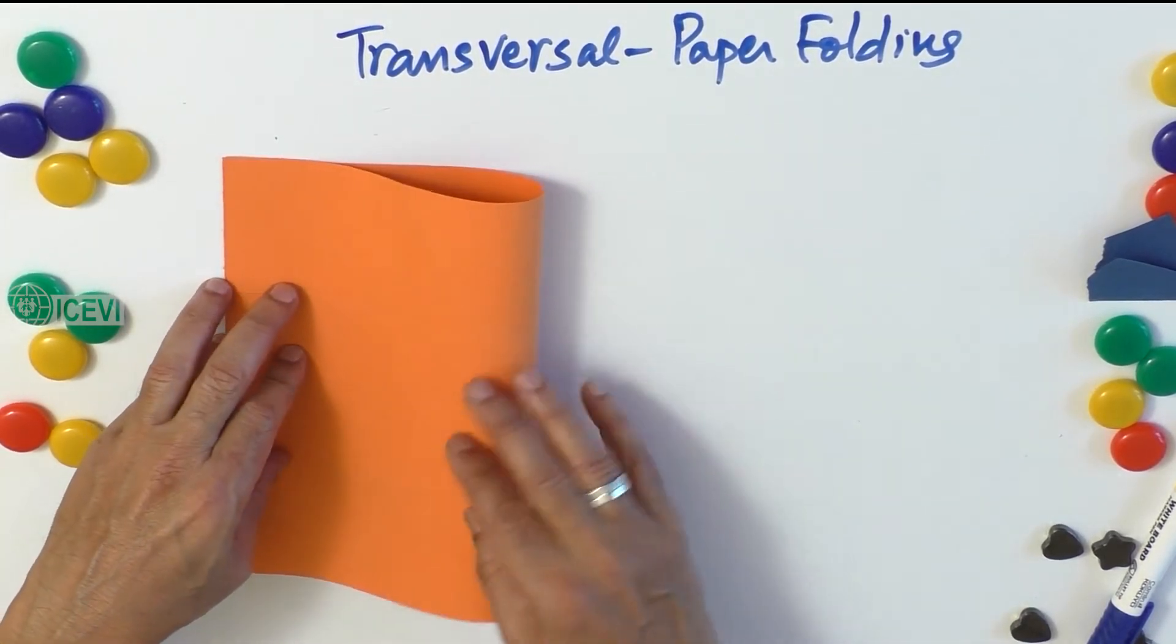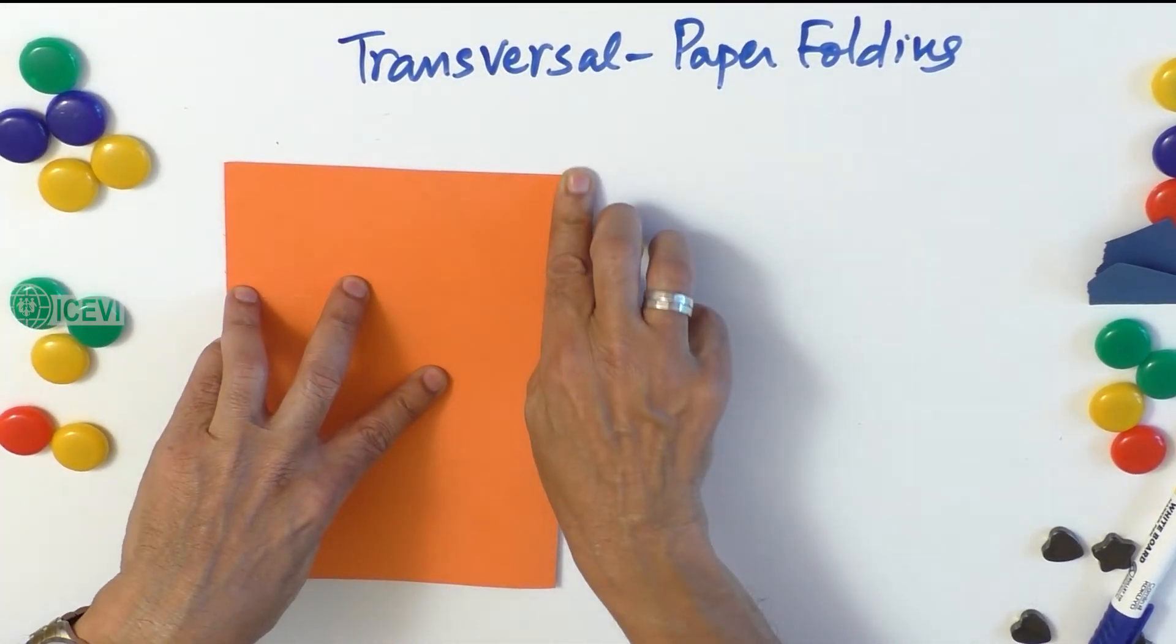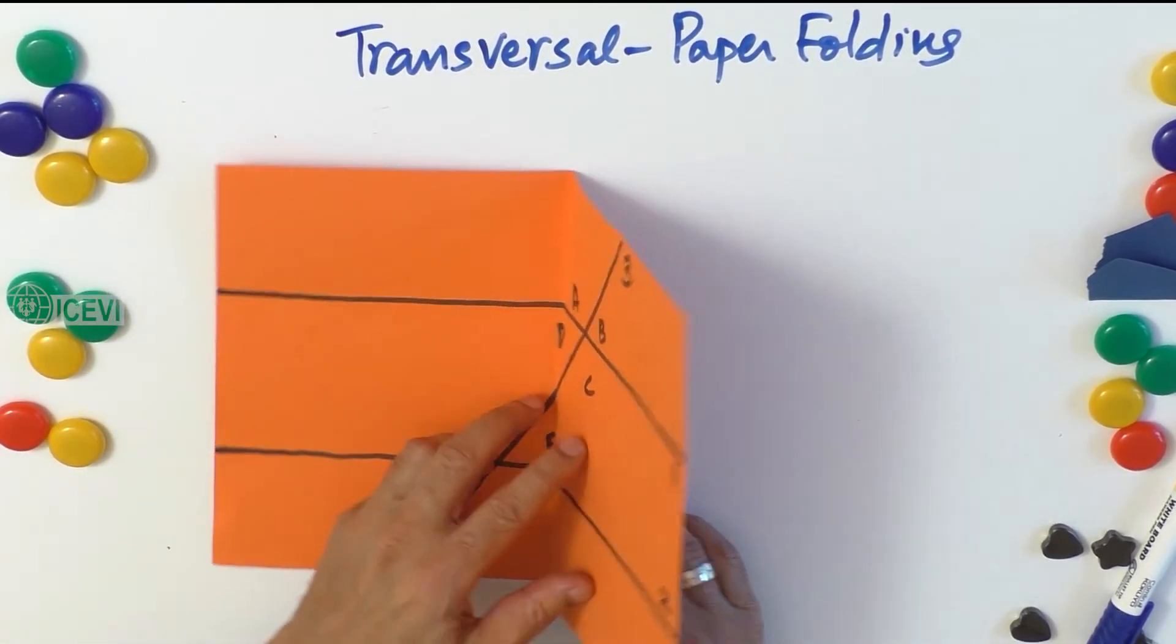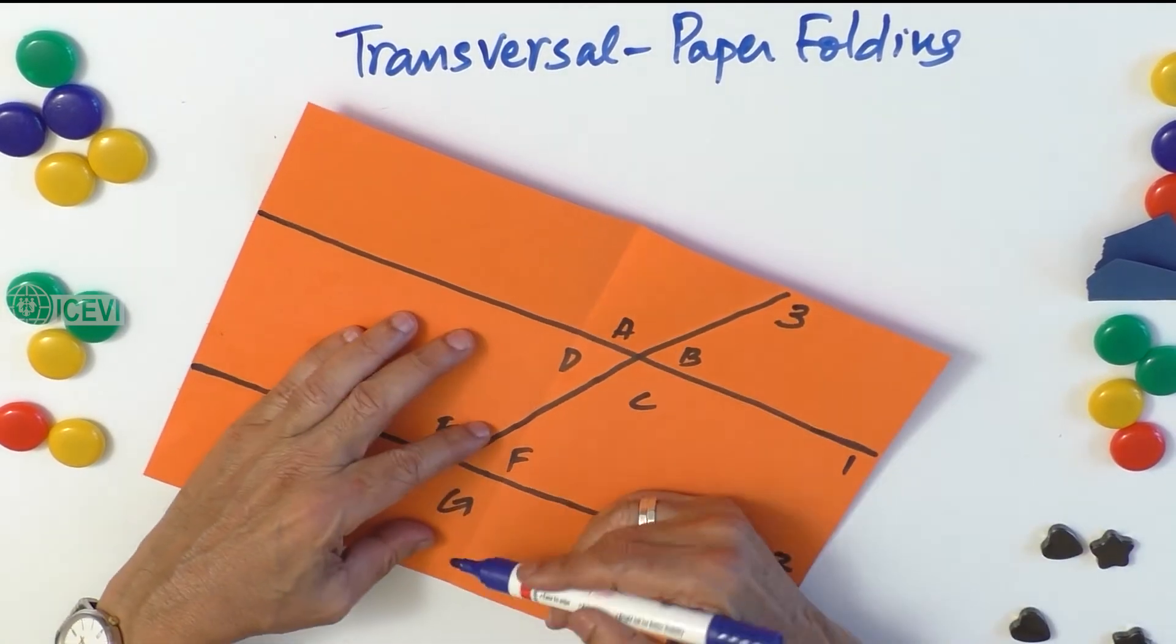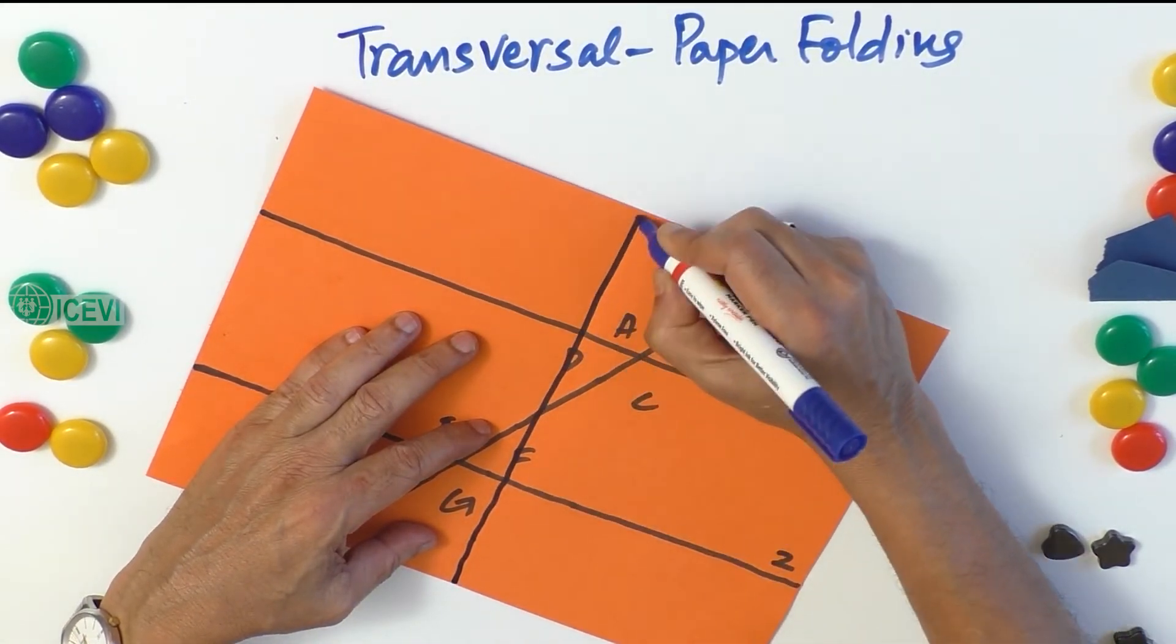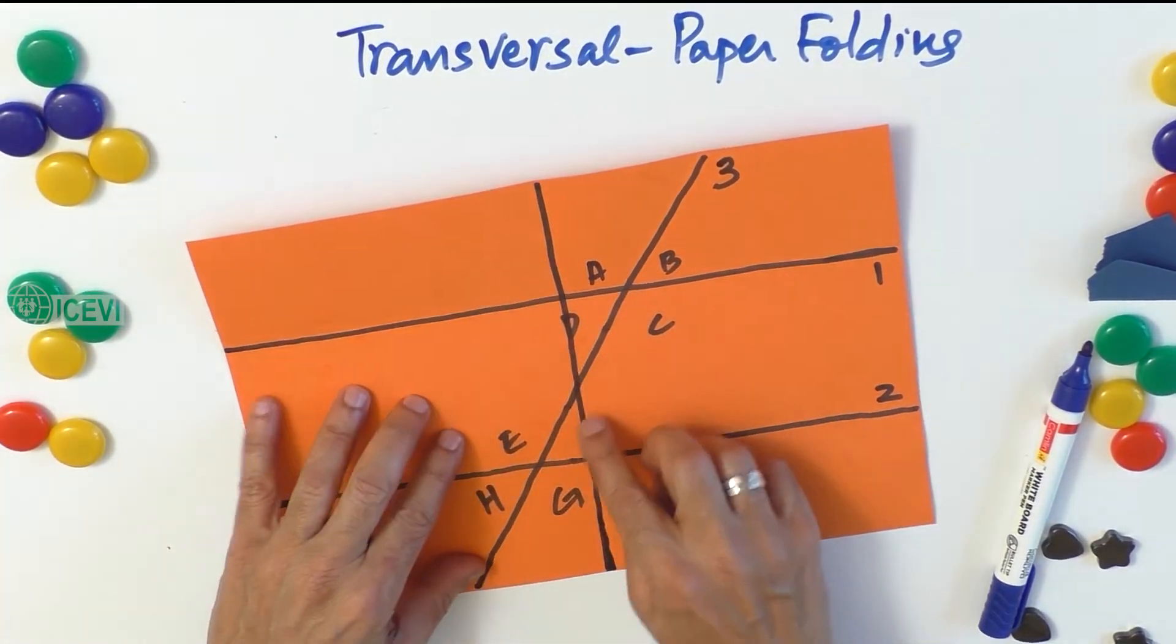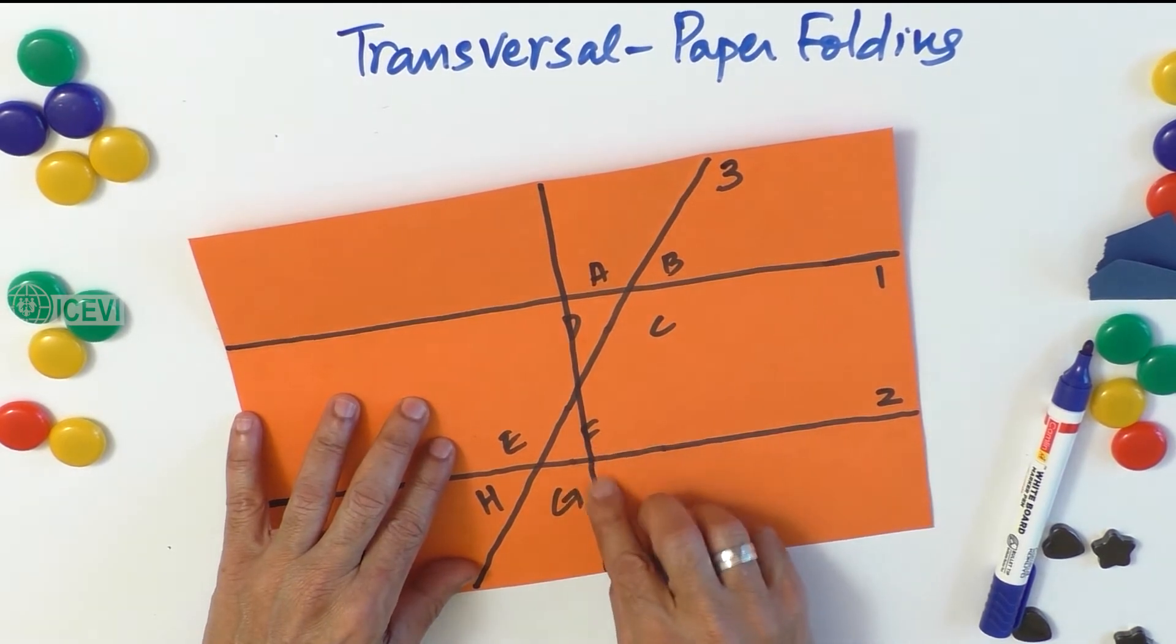So you can simply make a perpendicular line, which is nothing but the perpendicular transversal. You can make a crease and join the line, and then help the child to identify these angles.